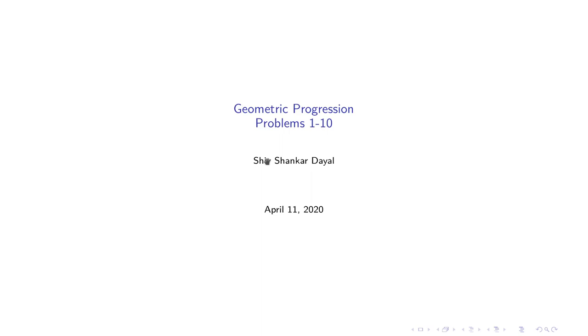Hello and welcome to this video. In this video we will do the first 10 problems of geometric progression. These problems will be very easy in nature and slowly we will deal with more difficult problems. So the first problem says: how many terms are in the GP 5, 20, 80, and so on up to 5120?